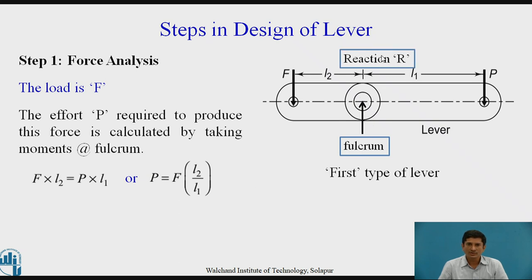Then the vertical force denoted is the reaction R. We are supposed to calculate this reaction R also. The vertical forces acting on the lever must be in equilibrium. In order to keep this in equilibrium, F plus P, the summation must be equal to this vertical force R as F and P are vertically downwards. Therefore, R equals F plus P.